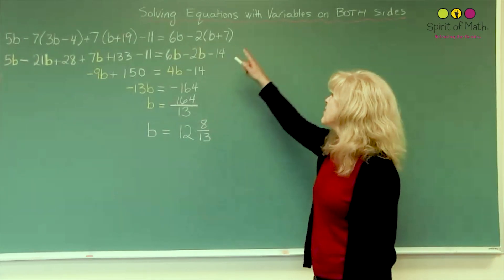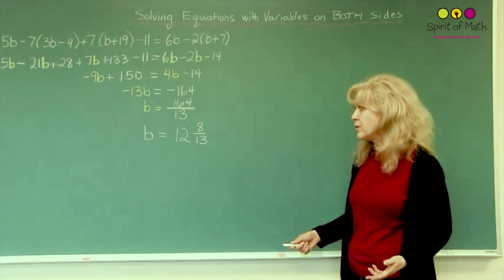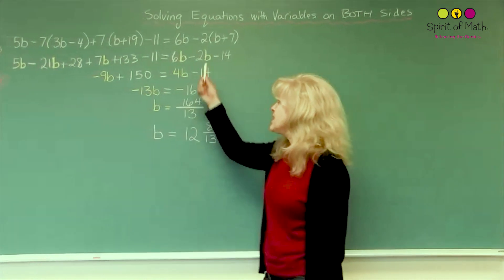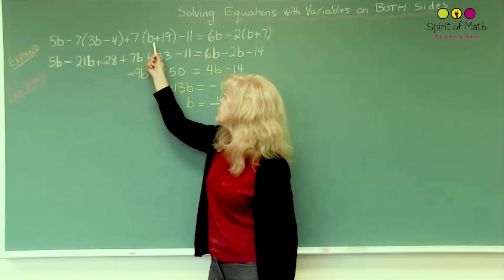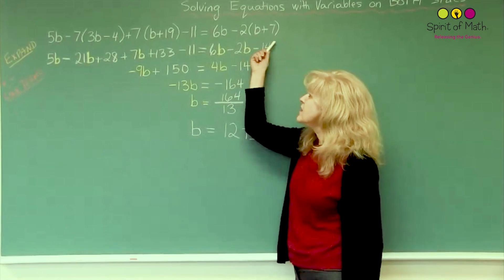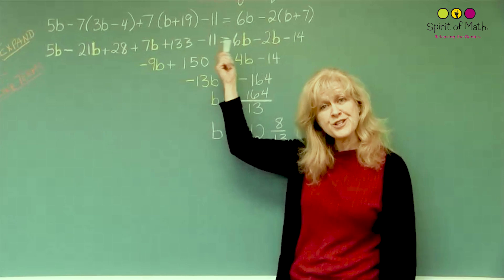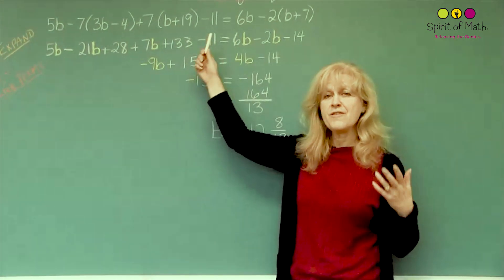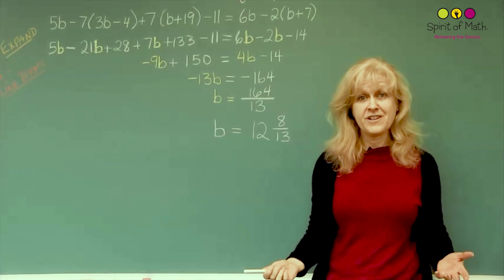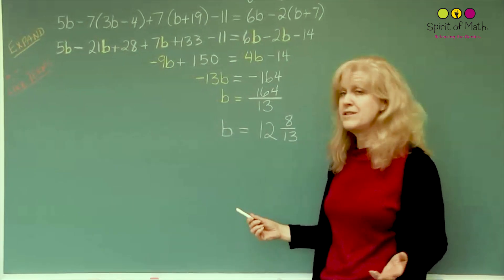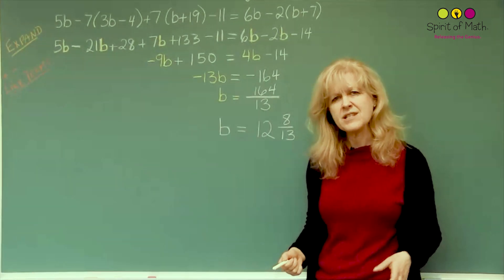In this video, I'm going to talk about solving equations with variables on both sides of the equal sign. If you notice in this equation, you've got b's on both sides, and you've got numbers on both sides — so it's not just solving from one side where x is on one side. This is actually your final step in solving one equation, and if you can do this type of question, then you just add on some different skills.